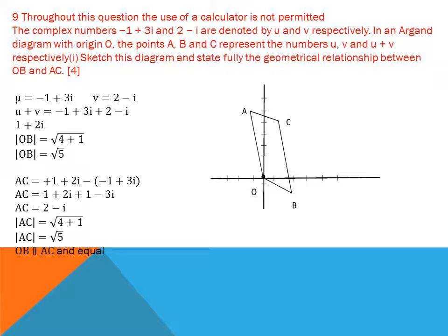AC represents u + v − u = v, so |AC| = √5 as well. Since OB and AC have equal magnitude and the same direction vector, plotting OA, OB, OC shows that OABC forms a parallelogram — meaning OB and AC are parallel and equal in length.